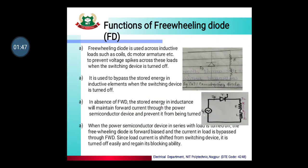A freewheeling diode is a simple diode that we can use to prevent the voltage spike across the load when the switching device is turned off.